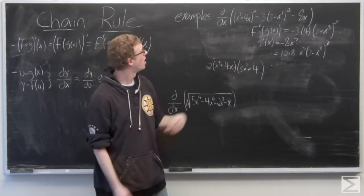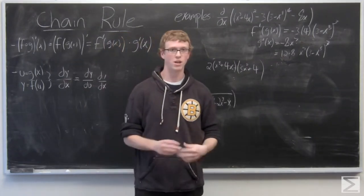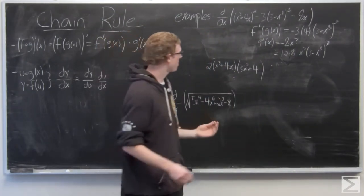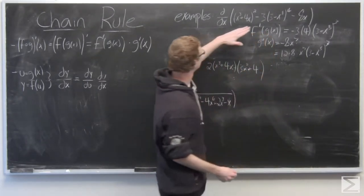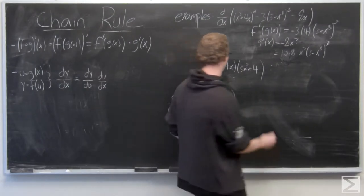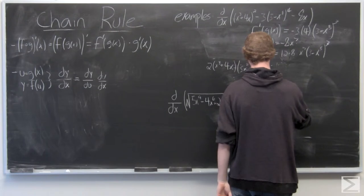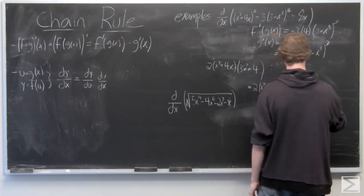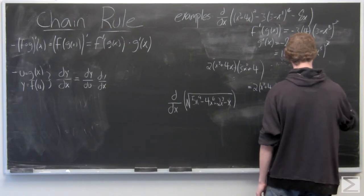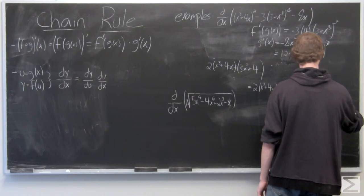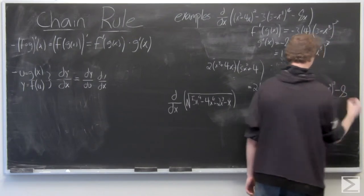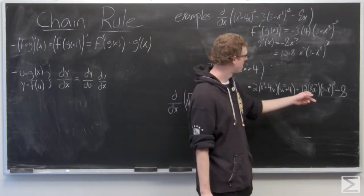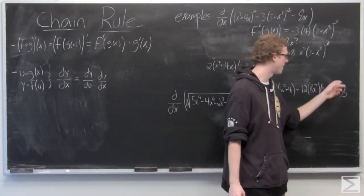We have 12 times 8, times x to the seventh, times 3 minus x to the eighth all cubed. The last term we don't need to use the chain rule for — we just have a minus 8 using linearity, treating it as a separate term. So putting it all together, the full derivative is: 2 times x cubed plus 4x times 3x squared plus 4, plus 96x to the seventh times 3 minus x to the eighth all cubed, minus 8.